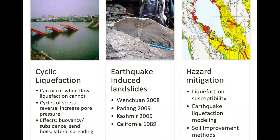To summarize what we talked about: first, we talked about cyclic liquefaction, how it can happen when flow liquefaction won't because the reversing cycles of stress of earthquake ground motion can build pore pressure with every repetition. We talked about the often destructive ways that cyclic liquefaction can manifest, like buoyant fuel tanks and sewers, sinking buildings, sand boils, and lateral spreading breaking bridges. Then we went over some historical examples of earthquake-triggered landslides and the role of liquefaction in those events. Finally, we went over liquefaction susceptibility mapping, earthquake liquefaction modeling, and some of the many methods that geotechnical engineers can use to strengthen soil and prevent cyclic liquefaction.